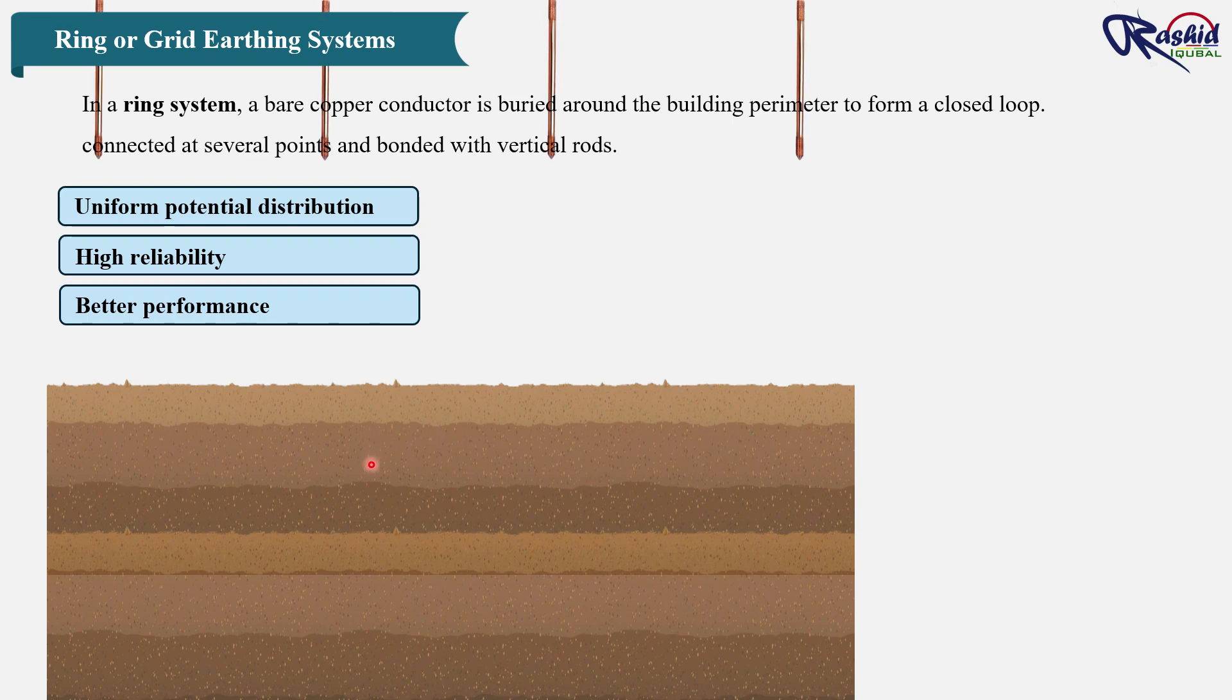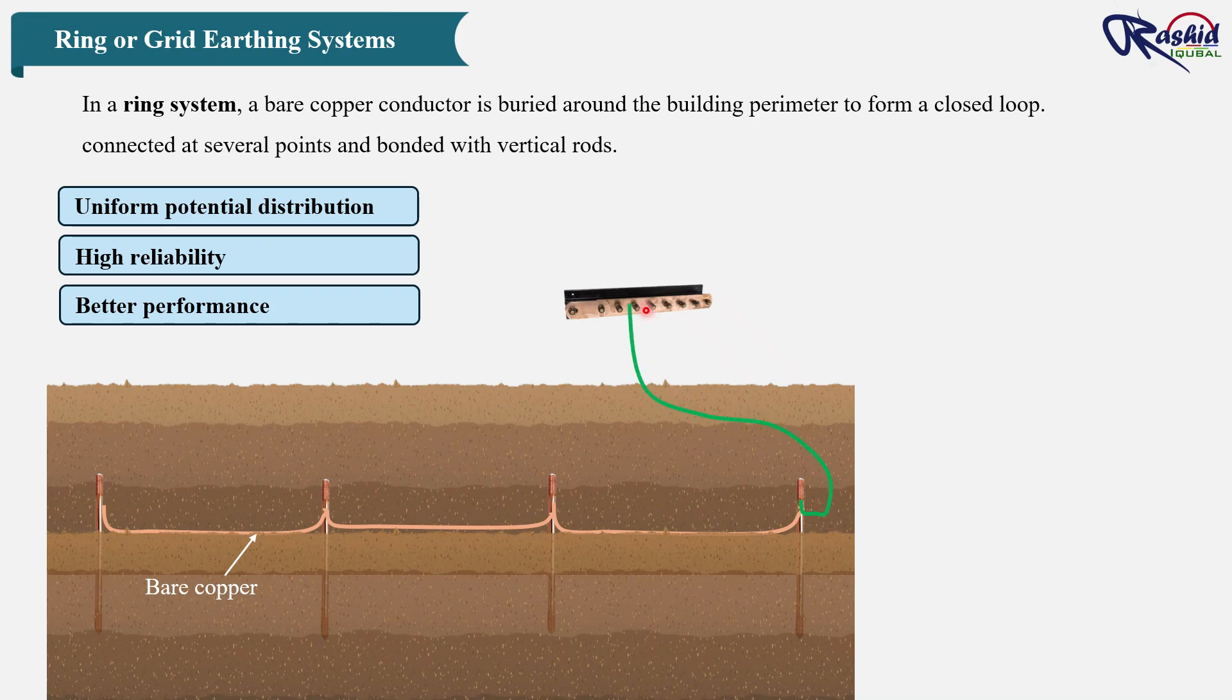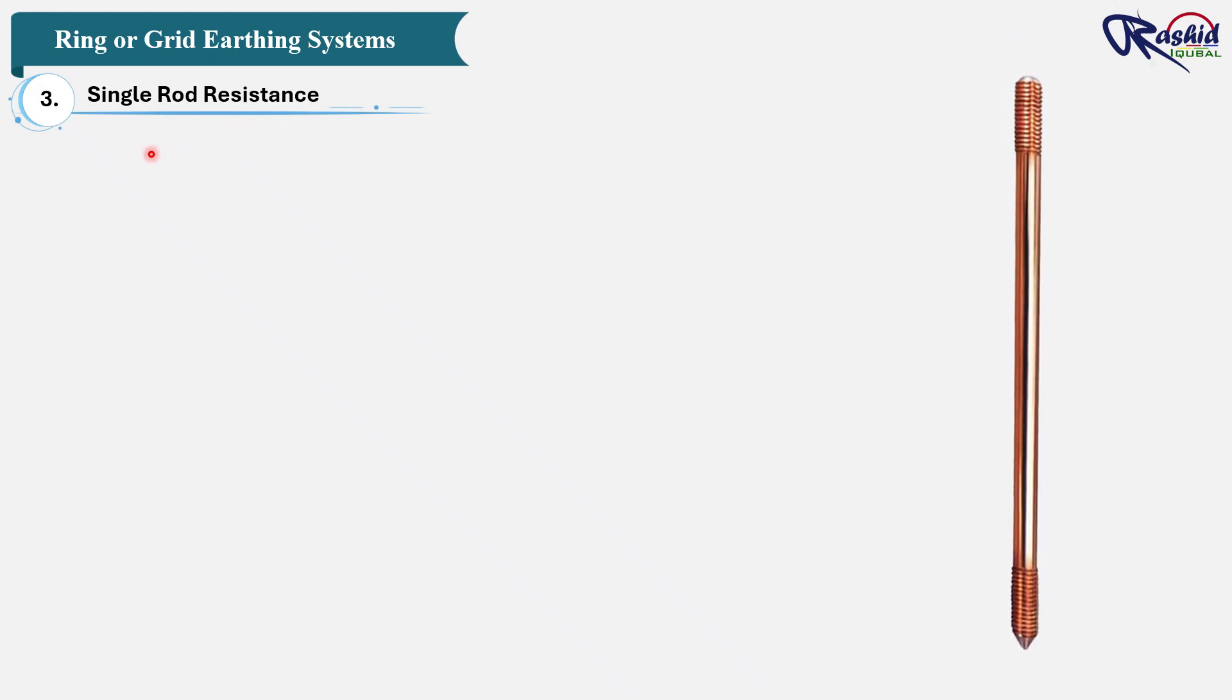In practice, the earthing system for a large building is usually a combination of these methods. Typically, we have multiple vertical rods around the plot, a buried bare copper conductor ring interconnecting all rods, and main earthing conductor linking the buried grid to the main panel. But now the question is, how do we decide how many earth rods are required, and what size of bare copper conductor should be used for the buried ring? To find that, we first need to calculate the resistance of a single earth rod. Once we know that value, we can estimate how many rods will be needed to achieve the required total earth resistance, and then we will calculate the size of buried copper conductor accordingly.